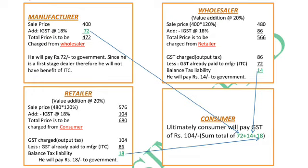Let's assume this manufacturer has his own farm, procures raw materials, makes everything in his own factory, and then sells to the wholesaler. He adds up his profit and everything, and suppose the sale price for his ready-made cloth comes out to 400. On this 400, he is required to charge 18% GST, which comes to 72, making the total price charged to the wholesaler 472. He will collect that 72 from the wholesaler and submit it to the government as taxes.